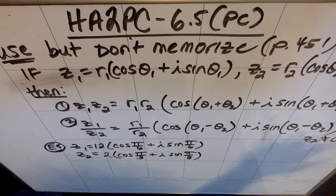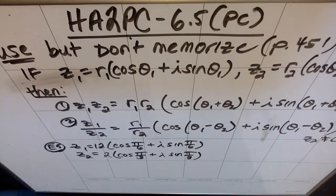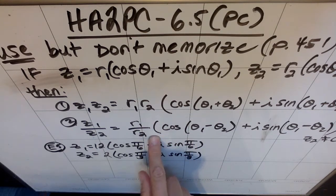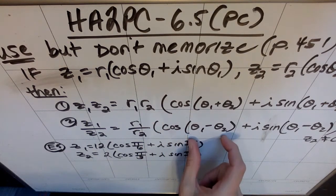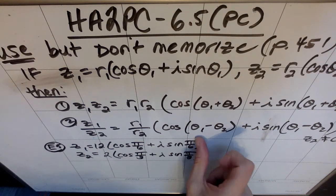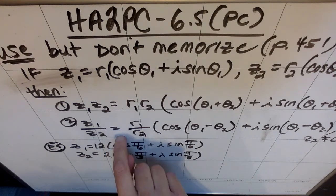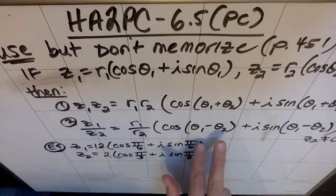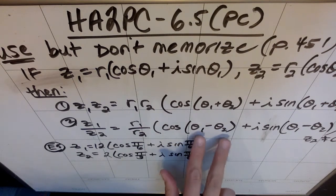If we wanted to divide z1 by z2, assuming that z2 is not 0, and that's important because you can't divide by 0, I would do r1 divided by r2. And then inside the cosine and the sine, instead of doing a sum, I would do subtraction, theta 1 minus theta 2. And again, that makes sense in my brain because z1 divided by z2 is not the same thing as z2 divided by z1. It's not commutative, so it makes sense that this operation is also not commutative.